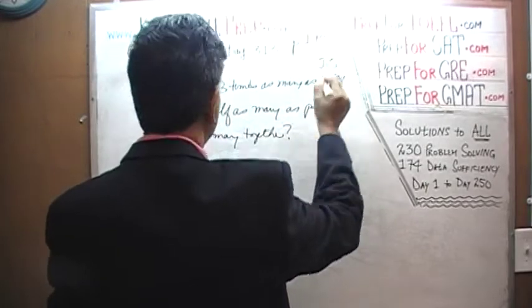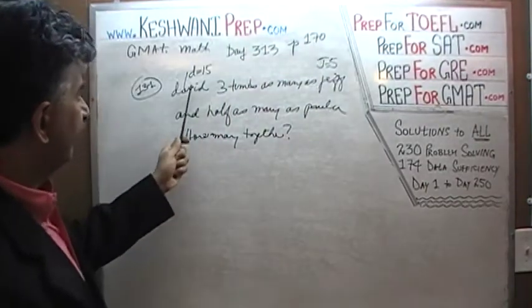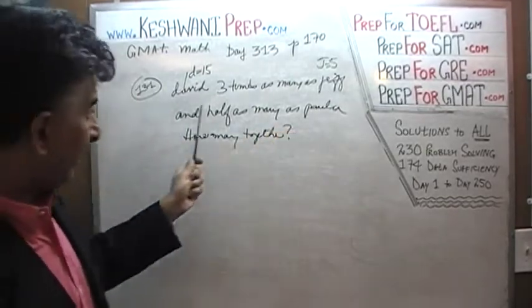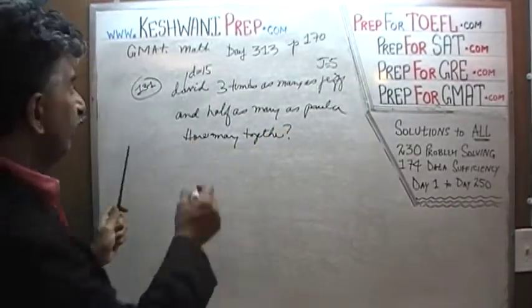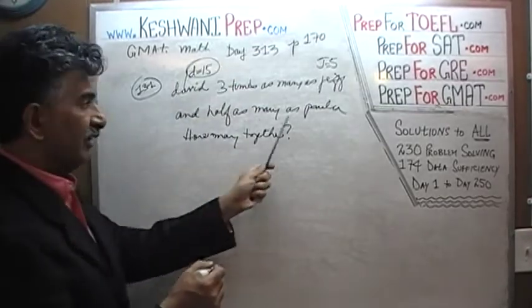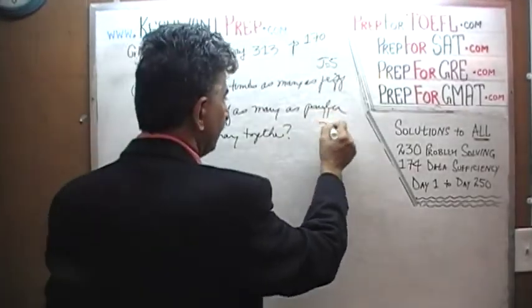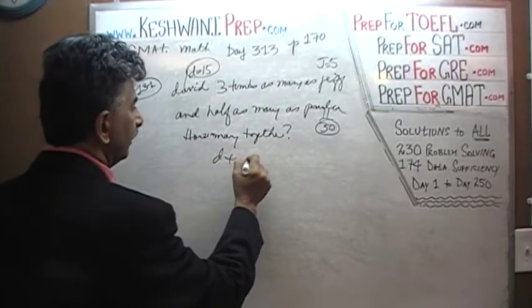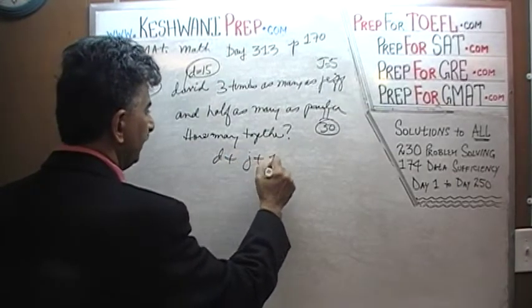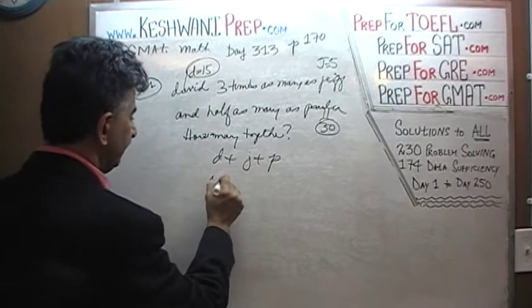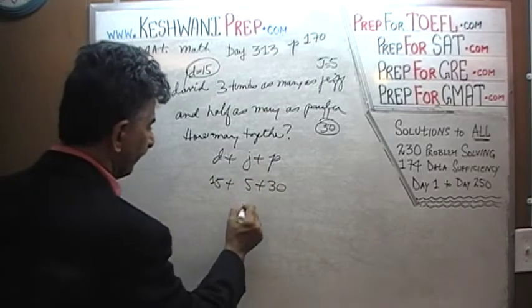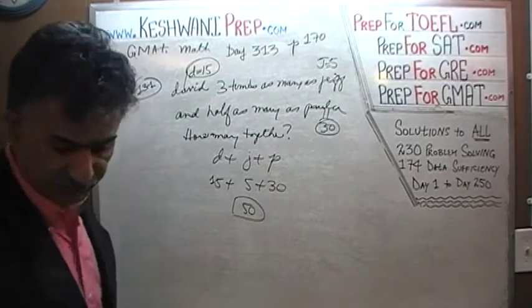So that's why it's 15, it has to be a nice multiple of 3. So David has 15 books and Jeff would have to have 5 books, J equals 5. And then they go on to say that he has half as many books—this is David—David has half as many as Paula. David we said has 15 books and he has half as many as Paula, so Paula must have had 30 books. Question is how many total.